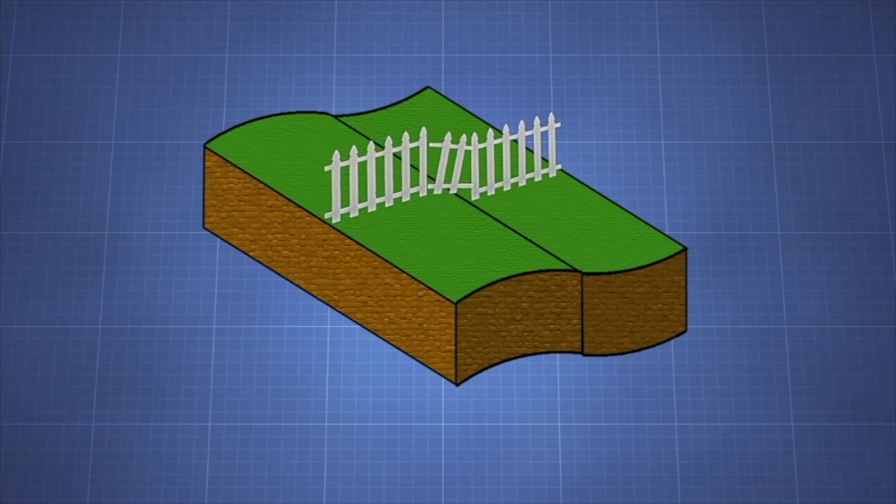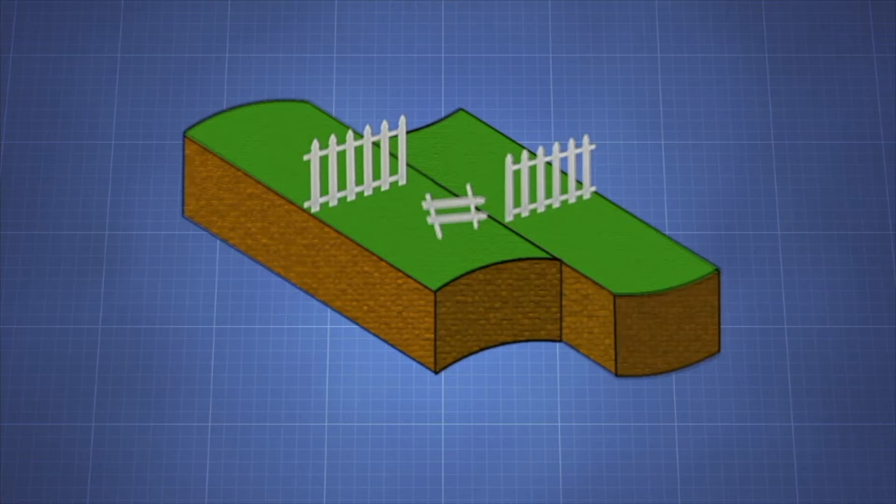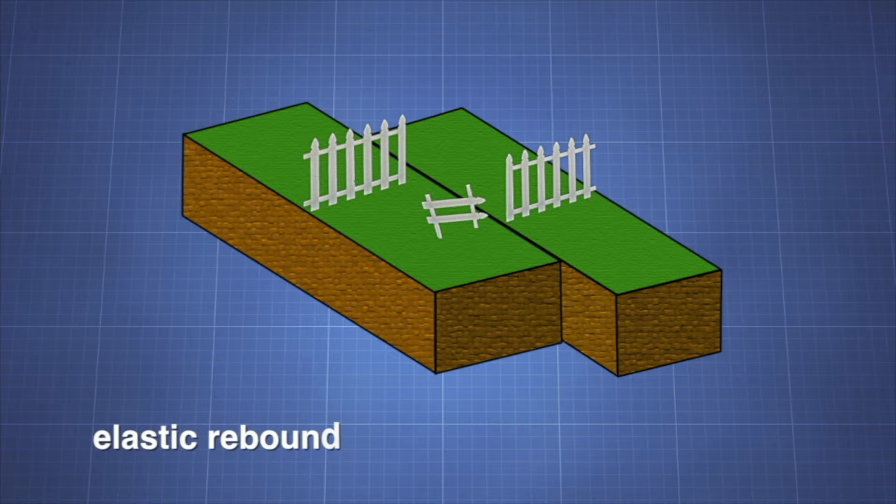Suddenly, the energy stored in the deformed rock is released in the form of heat and seismic waves. The strained rocks suddenly resume their undeformed state. The whole process is called elastic rebound theory.